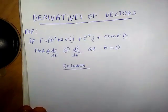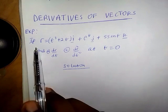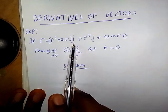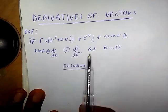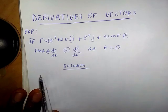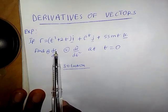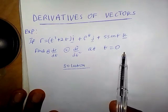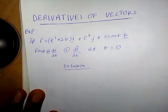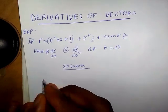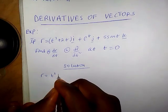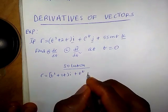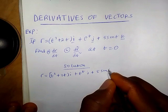Derivatives of vectors. We are given an example where r, our position vector, is given as (t³ + 2t)i plus e^t j plus 5sin(t)k. We have to find dr/dt and d²r/dt² at t equals 0. The position vector is given as (t³ + 2t)i plus e^t j plus 5sin(t)k.